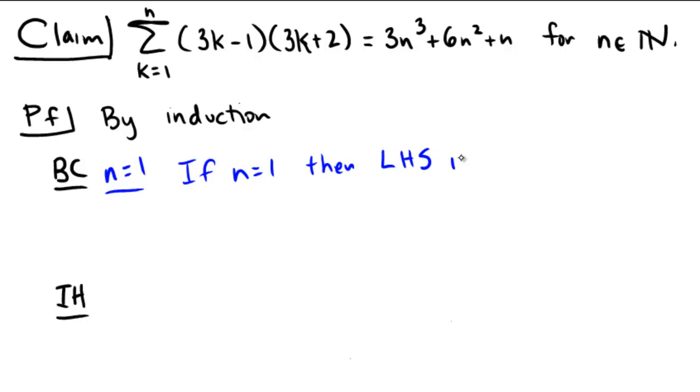Well, on the left-hand side, we only have k equals 1 to 1, so there's only going to be one quantity over there, and that's 3 times 1 minus 1 times 3 times 1 plus 2. 3 times 1 minus 1 is 2, 3 times 1 plus 2 is 5, and that's equal to 10.